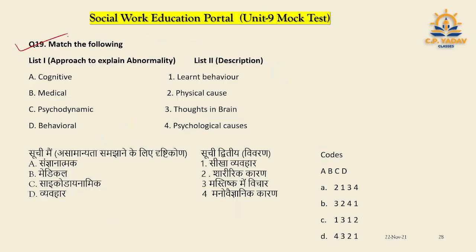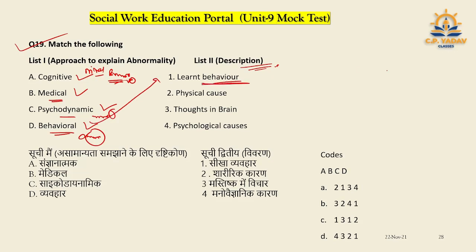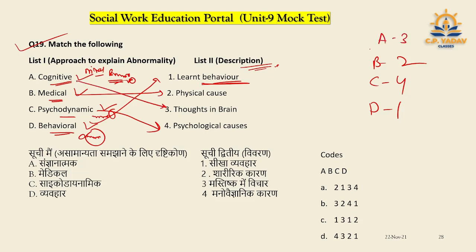Question number nineteen: Match the models of abnormality with their descriptions. Cognitive relates to thoughts in the mind. Behavioral relates to learned behaviors — pairs with the first. Psychodynamic relates to psychological causes — pairs with the fourth. Medical relates to physical causes. The correct pairing order is 3-2-4-1, so B is the right answer.